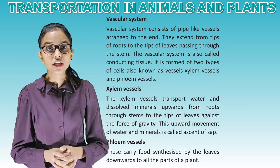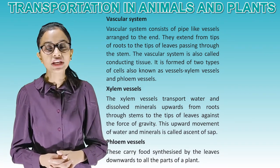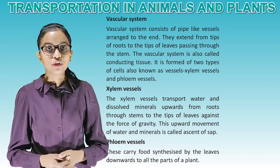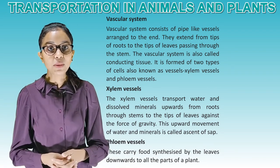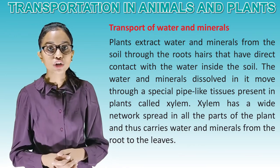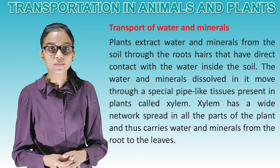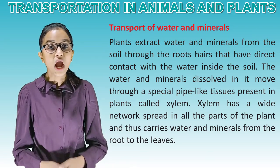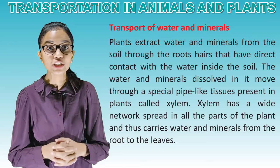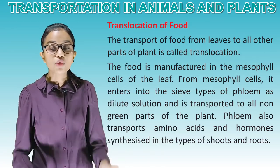Xylem vessels transport water and dissolved minerals upward from roots through stems to the tips of leaves, against the force of gravity. This upward movement of water and minerals is called ascent of sap. Plants extract water and minerals from the soil through the roots, which have direct contact with the water inside the soil. The water and minerals dissolved in it move through xylem, which has a wide network spread in all parts of the plant, carrying water and minerals from the root to the leaves.